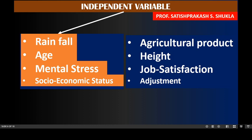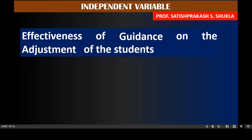In the last example, the two variables are socio-economic status and adjustment. The socio-economic status of a person may affect the adjustment of the person, so socio-economic status can be an independent variable. In terms of a research problem — 'Effectiveness of guidance on the adjustment of students' — the impact of guidance on adjustment is being studied, so guidance is the independent variable and adjustment is affected by it.